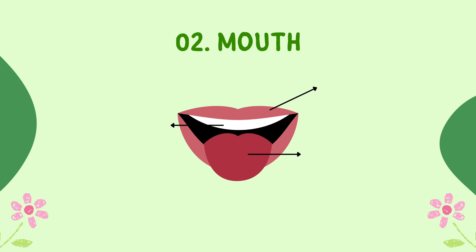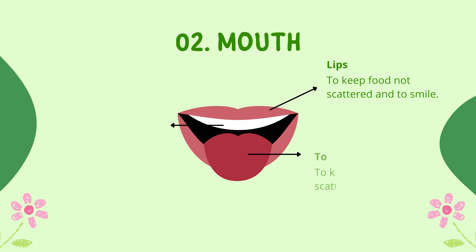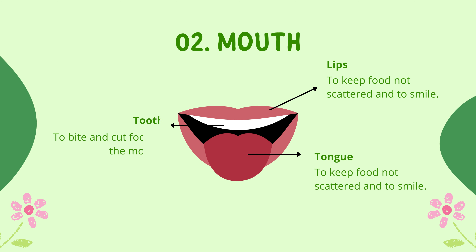Number 2: Mouth. Lips to keep food from scattering and to smile. Tongue to taste food. Teeth to bite and cut food in the mouth.